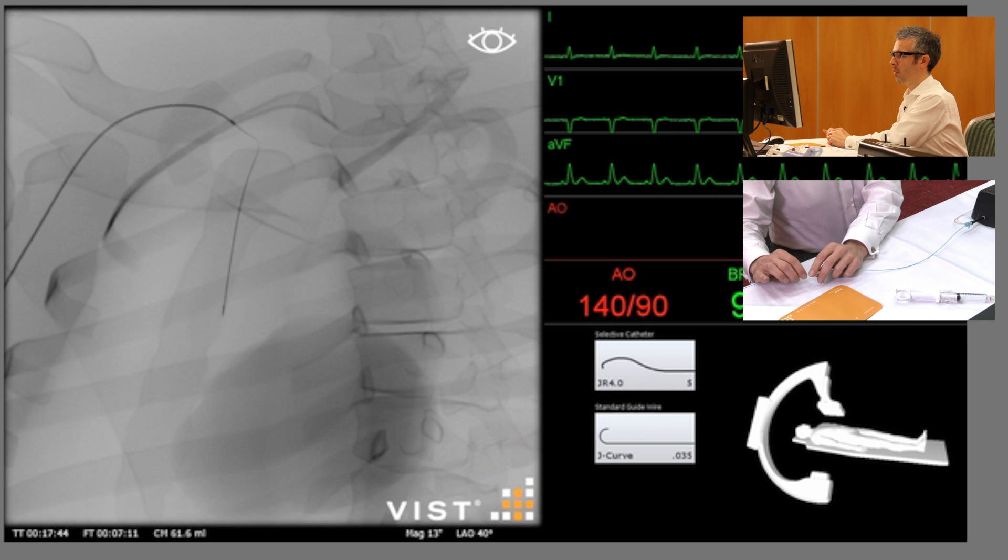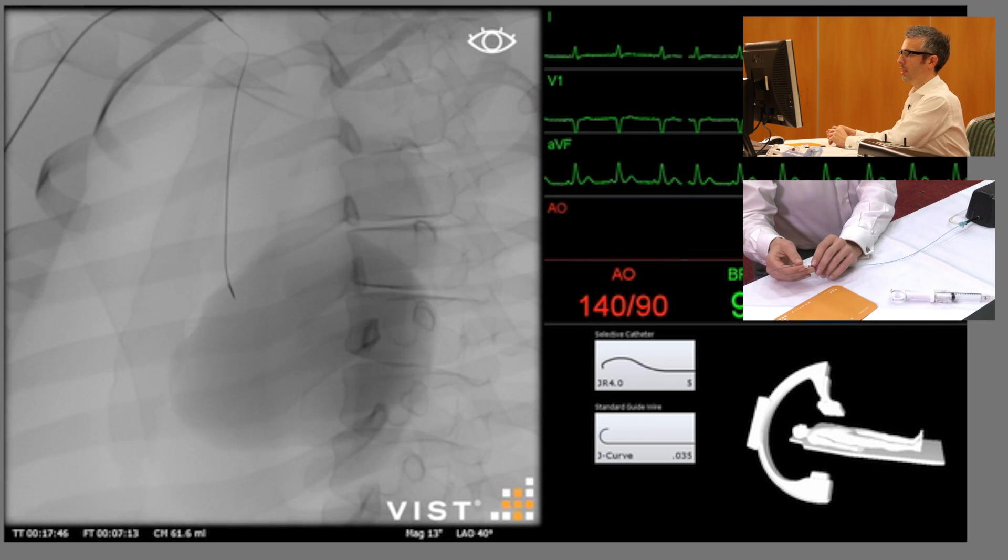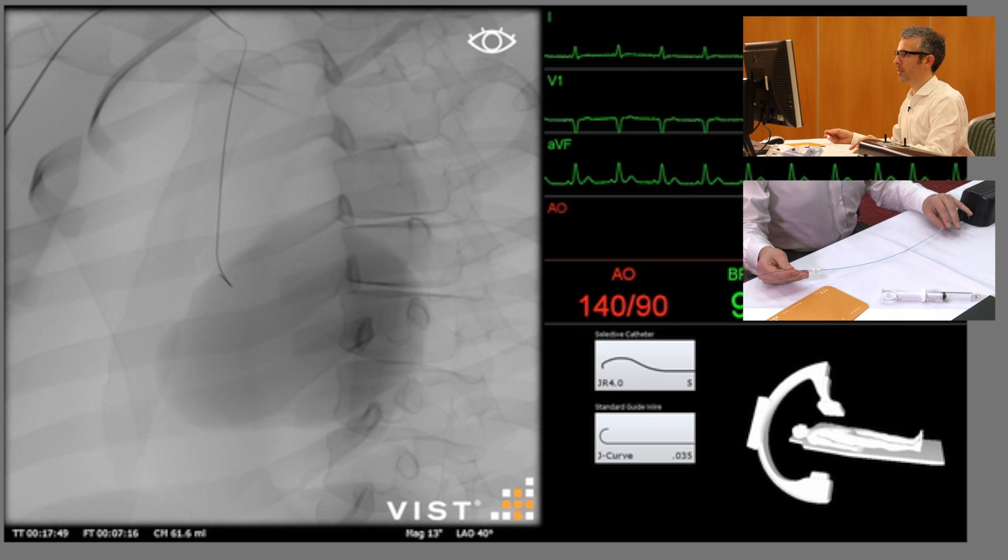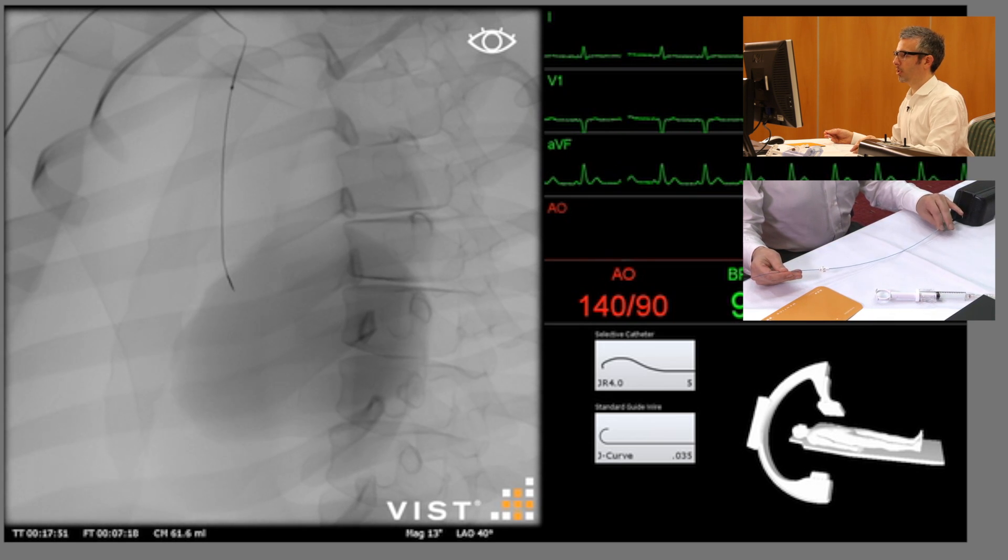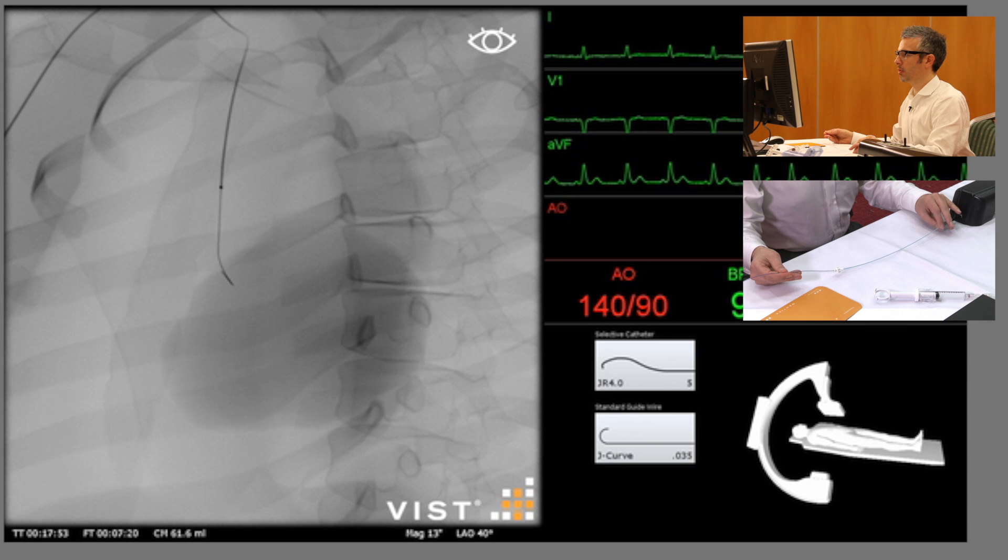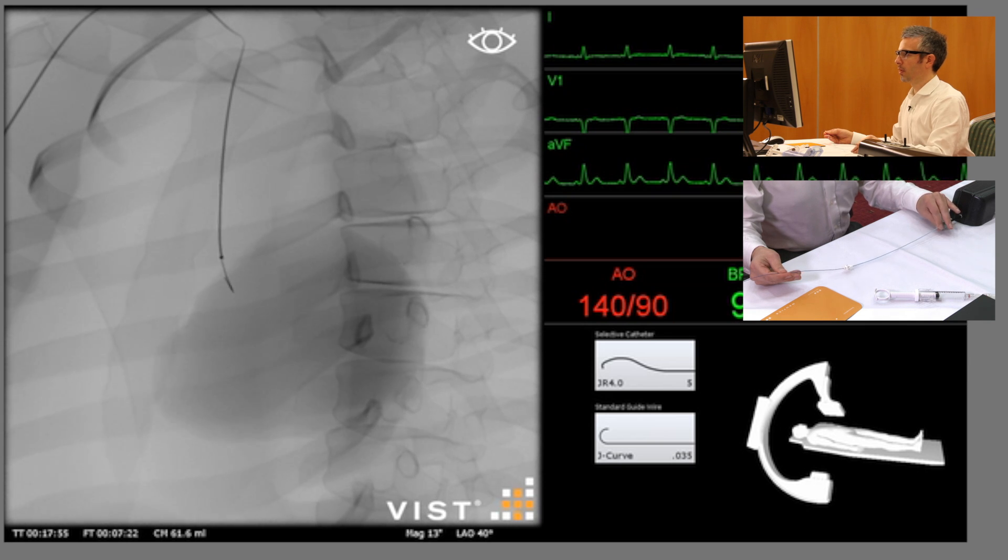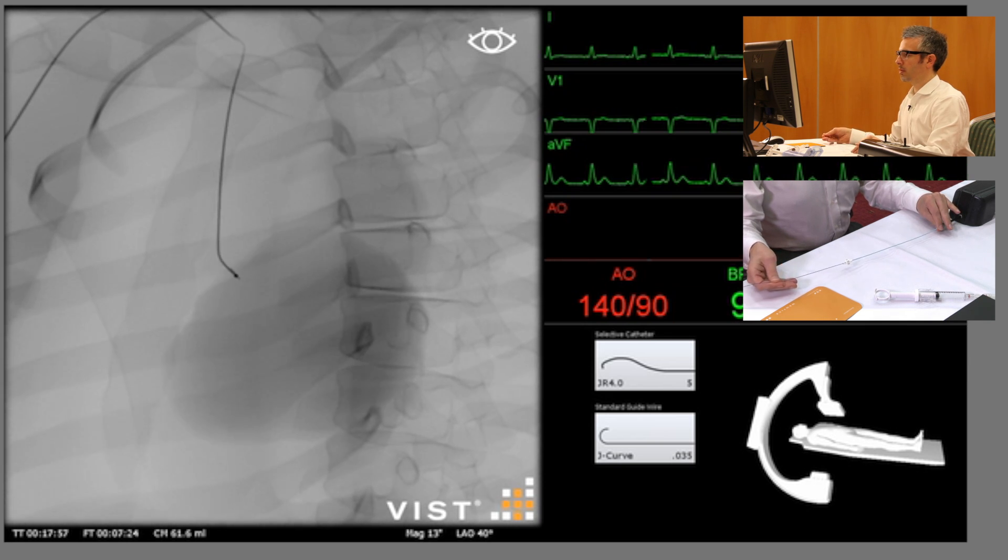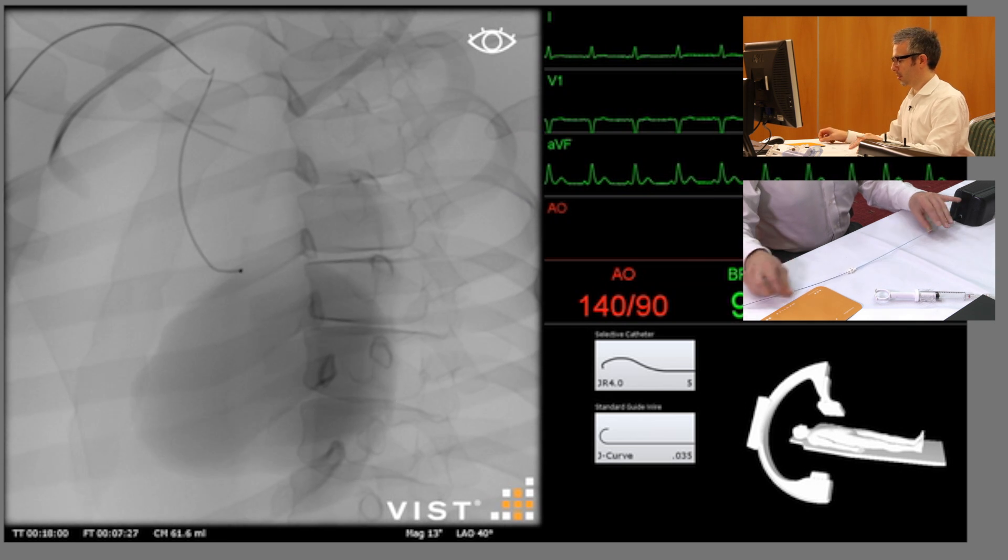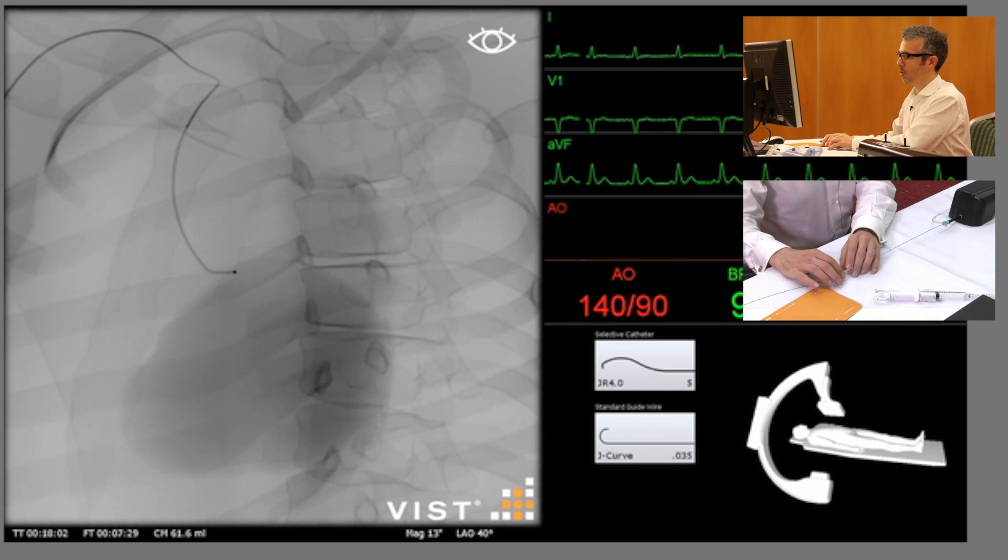And now you can see the wire heading down into the ascending aorta catheter on the left-hand side of the screen. I'm bringing down my guide catheter now whilst keeping the wire fixed. And that's the job of the 035 guide wire completed. I'm just going to leave that at the top here.